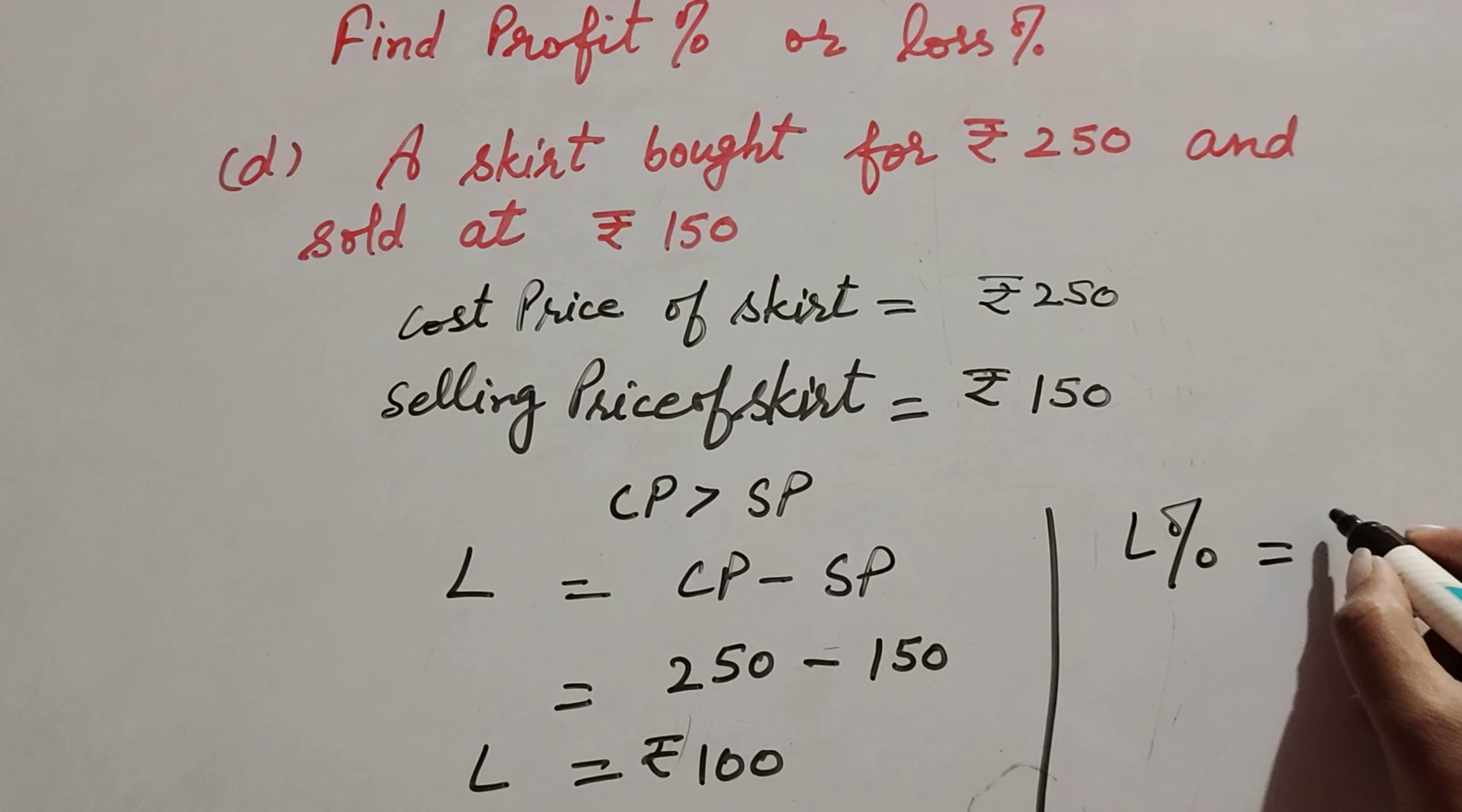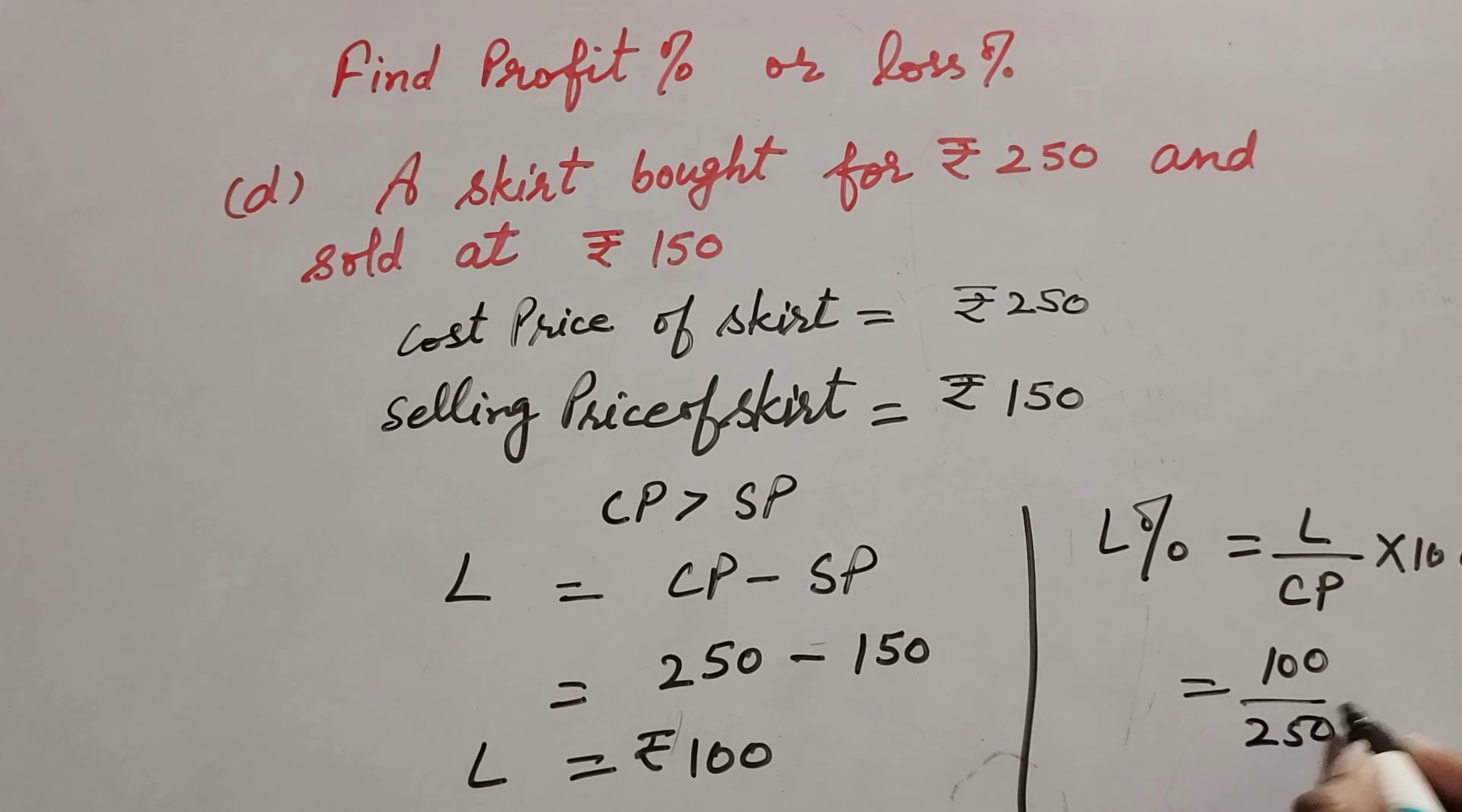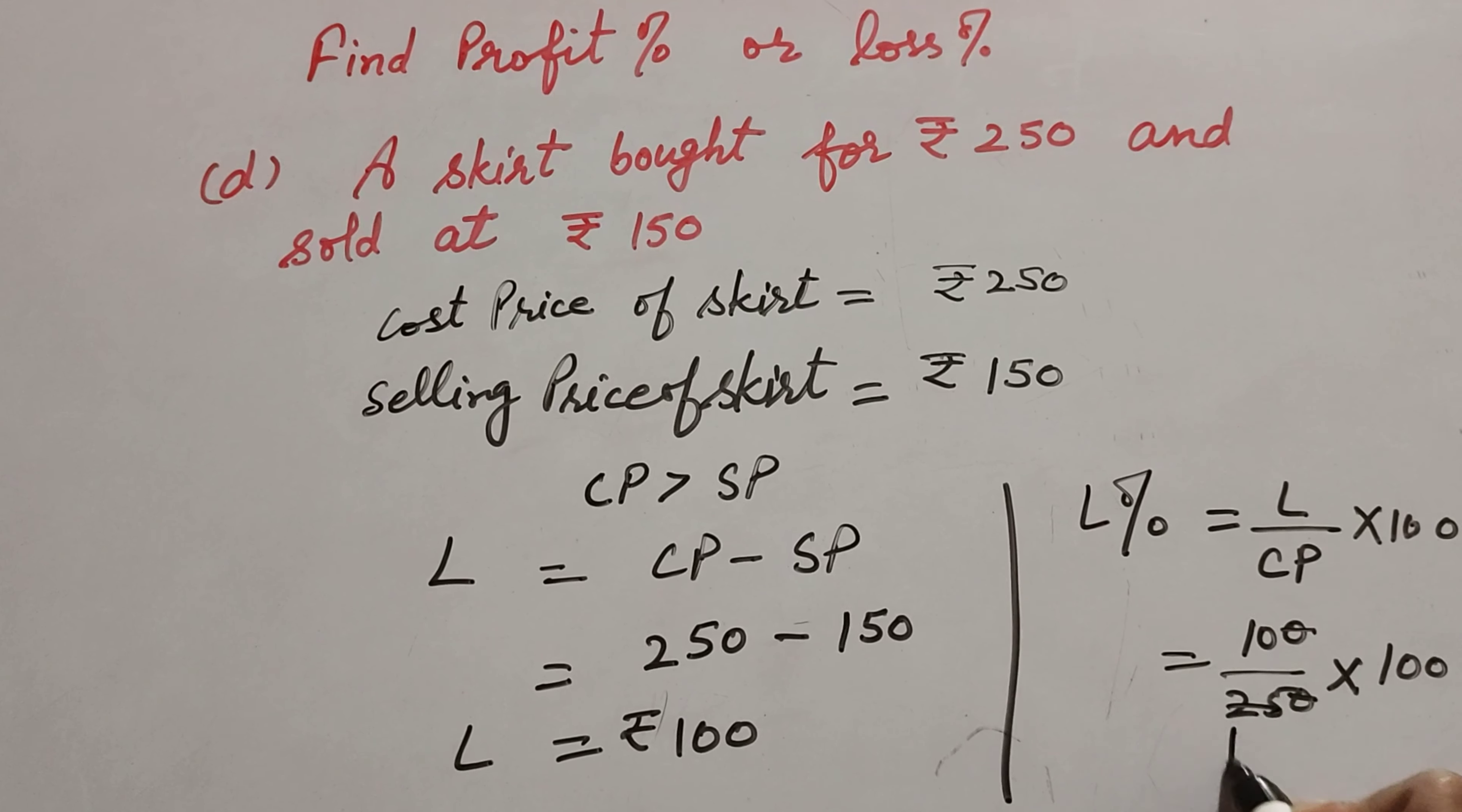Loss percent equals loss over cost price multiplied by 100. Loss is equal to 100, cost price is 250, multiply by 100. So 0 in numerator, 0 in denominator, both are cancelled.